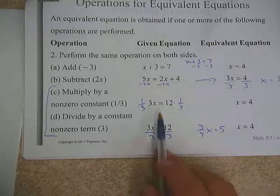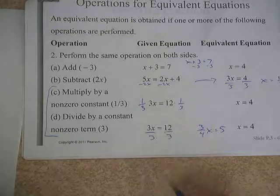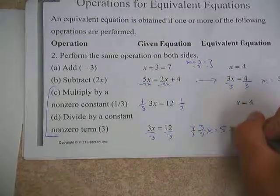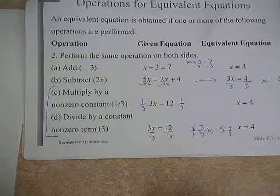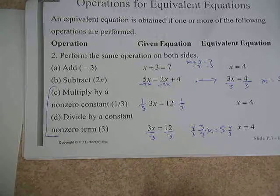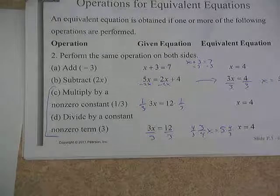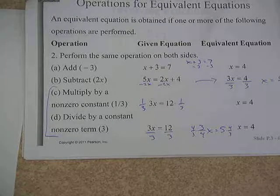I would suggest, though, that if there was something like 3 quarters x equals 5, for instance, instead of dividing by 3 quarters, it's easier when we have a fraction in front of x to multiply by the reciprocal. So I'd multiply both sides by 4 thirds. That way I'm not worrying about dividing by a fraction.